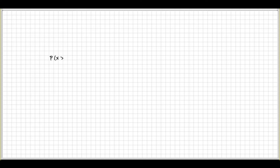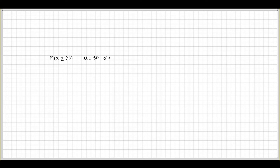Let's say you had the probability of X being greater than or equal to 20. And let's say that the population mean was 30, and the population standard deviation was 10. These pieces of information are very important in creating a normal distribution.